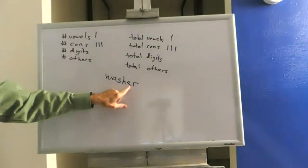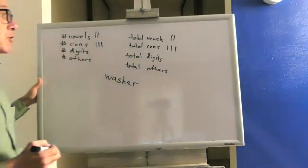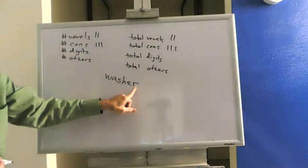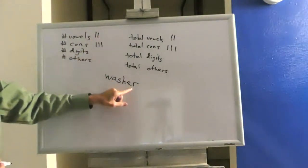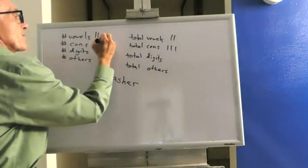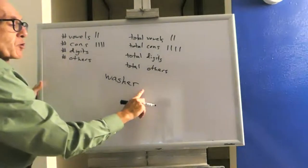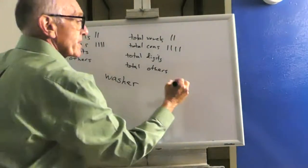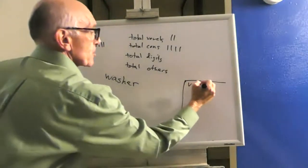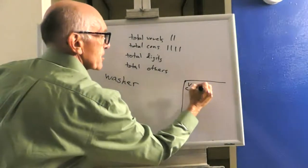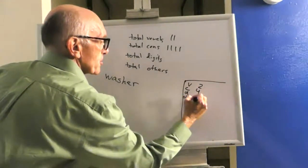Move on to the letter E. Is E a vowel? Yes, it is, which means I have one additional vowel. Move on to the letter R. Is R a vowel? No. Is R a consonant? Yes. I've hit the end of the word and now I can print out the results for that particular sentence, which is vowels is two, consonants is four, digits is zero, and others is zero.